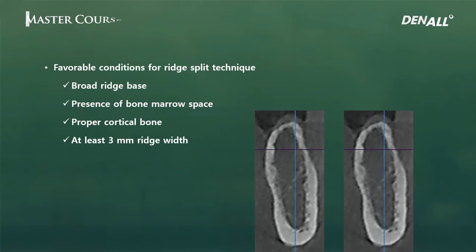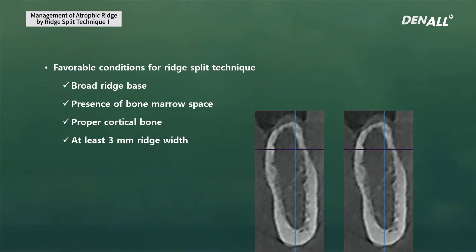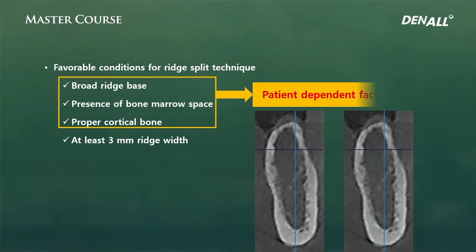If it falls under the right indication, you can use the technique. For ridge split, it is important to create favorable conditions. You can use the ridge as is, or you can make the indication right. The most favorable condition is: a broad ridge base, sufficient bone marrow space, proper cortical bone, and a ridge width of at least 3 mm.